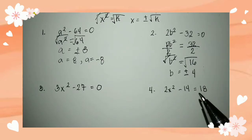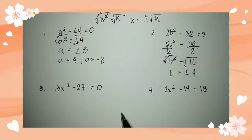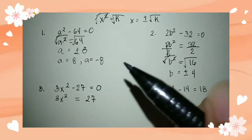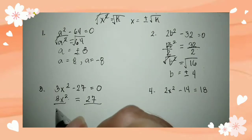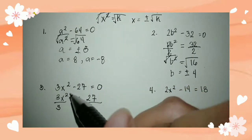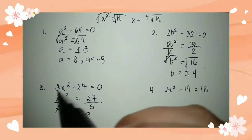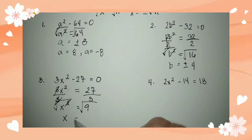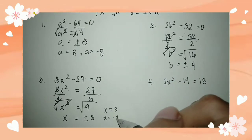Example number 3: we have 3x squared minus 27 is equal to 0. Transpose the constant: 3x squared equals 27. Divide both sides by 3 to eliminate the coefficient. Cancel: x squared equals 9. Extract the square root. Cancel square root. x is equal to positive and negative 3. So the solutions are x is equal to positive 3 and x is equal to negative 3.